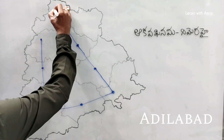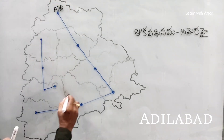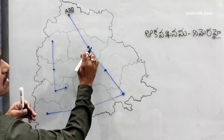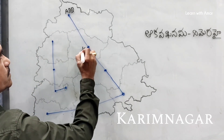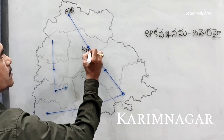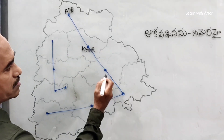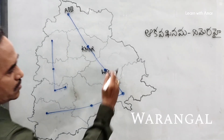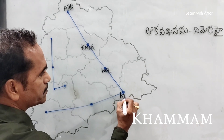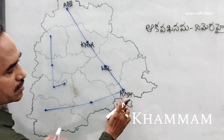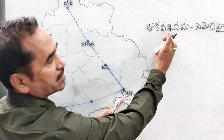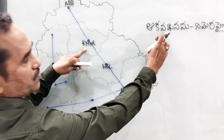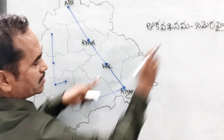We begin our journey from Adilabad. We have to stop at each district. The first district is Karimnagar. Then we go to Warangal. Next is Khammam — remember, Khammam means corner. So: A for Adilabad, Kha for Karimnagar, Va for Warangal, then Kha for Khammam.